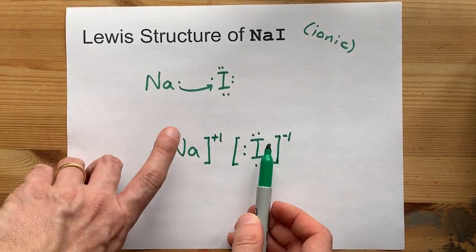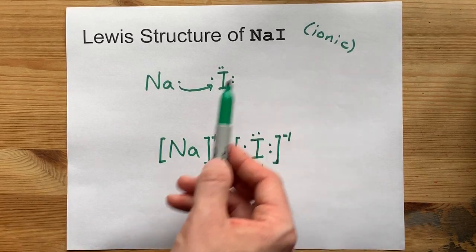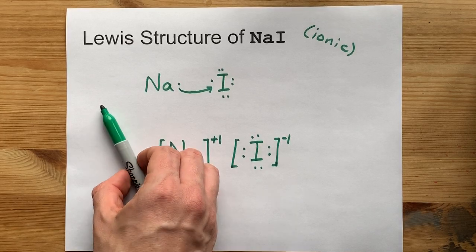Together, these ions are attracted because opposite charges attract and make an ionic bond. This is the Lewis structure. You're good at this. I believe in you. Best of luck.